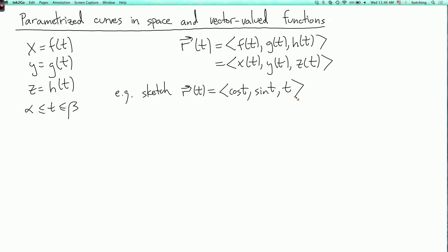So let's think about what's going on here. If we ignore the z component and just think about what the x and y components are doing, then this is a circle. And I should say that since we don't specify a range for t, the default is that t can be any real number.